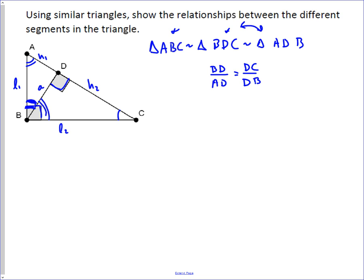And then what we can do is we can actually plug in our values here, and so we said BD was A, and so that would be A over H1 equals H2 over A,